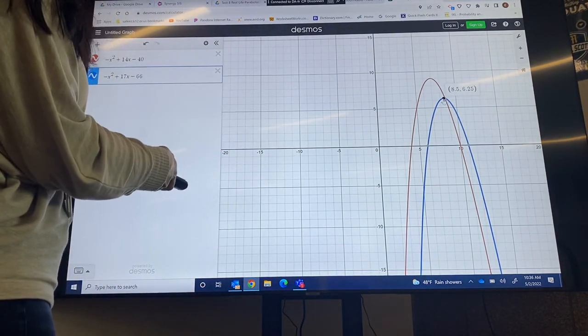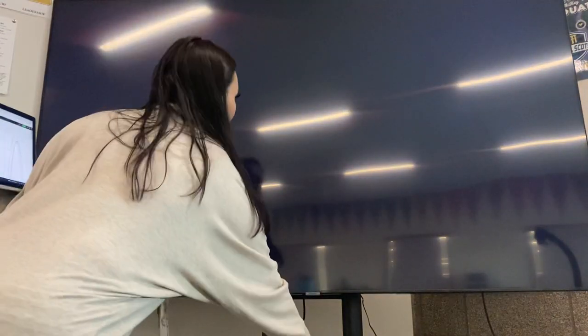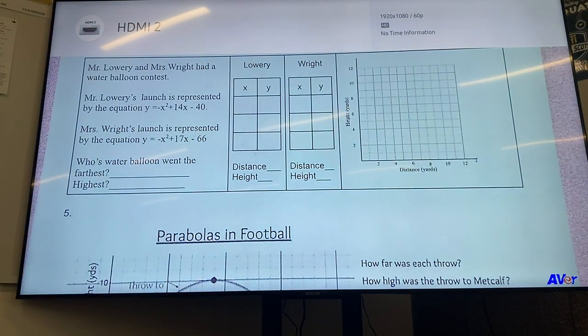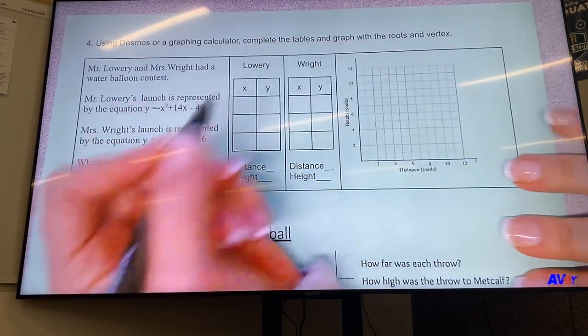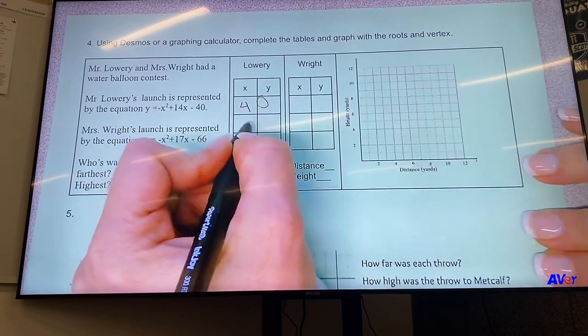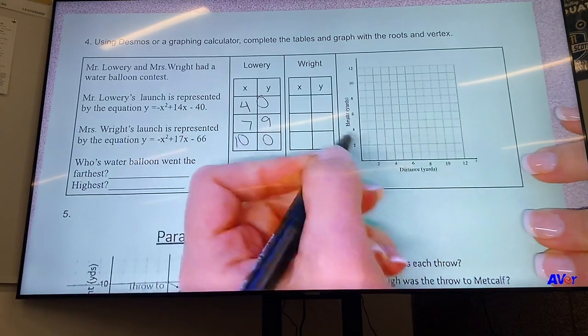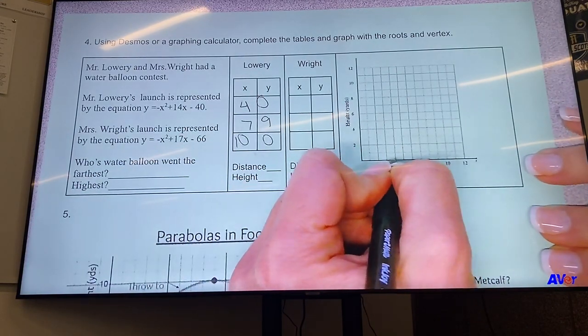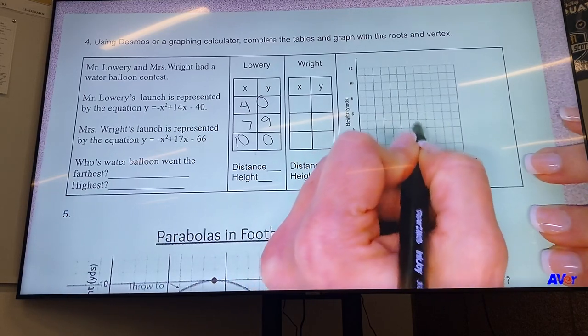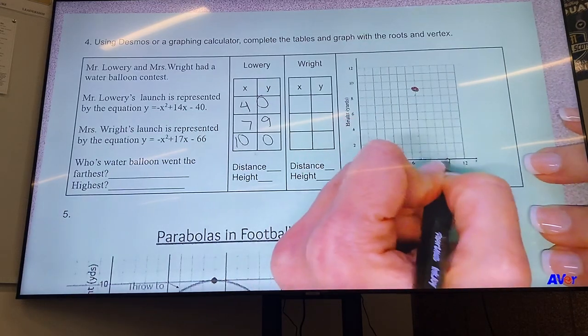All right, so the points for Lowery's graph: our roots were at (4, 0), the vertex was (7, 9), and then the other root was at (10, 0). So then I can plot those points on the graph. So right here at (4, 0), at 7... 1, 2... 7, 9 is the vertex, and then at (10, 0). So then his graph looks kind of like that.